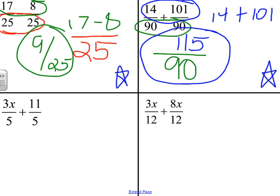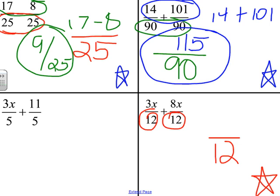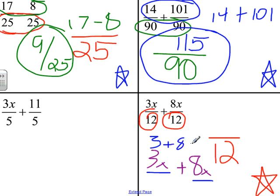Whether you have a variable in the numerator or a variable in the denominator, you still just keep the denominators the same and add or subtract the numerators. Looking at the bottom right-hand corner at the red star, our denominator is 12 in both cases, so our final denominator is going to be 12. Our numerator is 3x plus 8x. Remembering our lessons on combining like terms, both terms have x as a variable, so we add their coefficients: 3 plus 8 equals 11. Our final answer is 11x over 12.